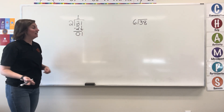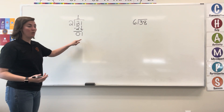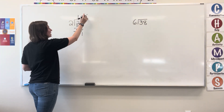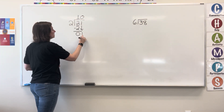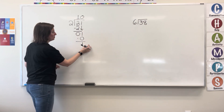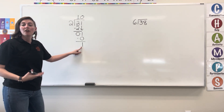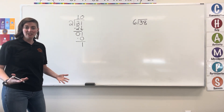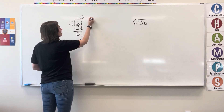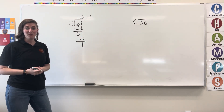Now I'm looking at 2 fitting into 1. 2 does not fit into 1, so I'm going to write a 0. 0 times 2 is 0, subtract, I have a 1. There are no other digits to bring down, so I'm left with this 1. I'm going to write that as a remainder — what's left over. So, 10 remainder 1. That's my quotient.